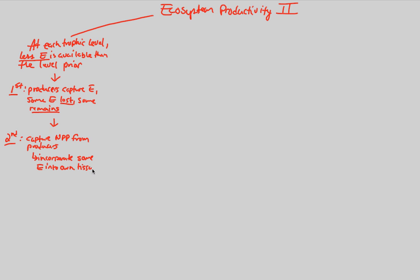At this level, we lose some energy through both cellular respiration and defecation, or feces. Both of these promote the losing of some energy, whereas some energy is incorporated into the organism's own tissues. So the primary consumer consumes plants, stores some energy, and loses some through cellular respiration and feces.